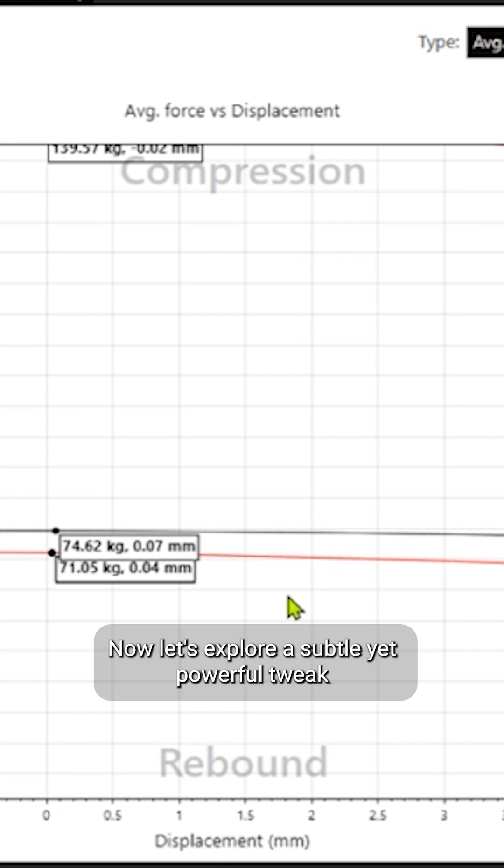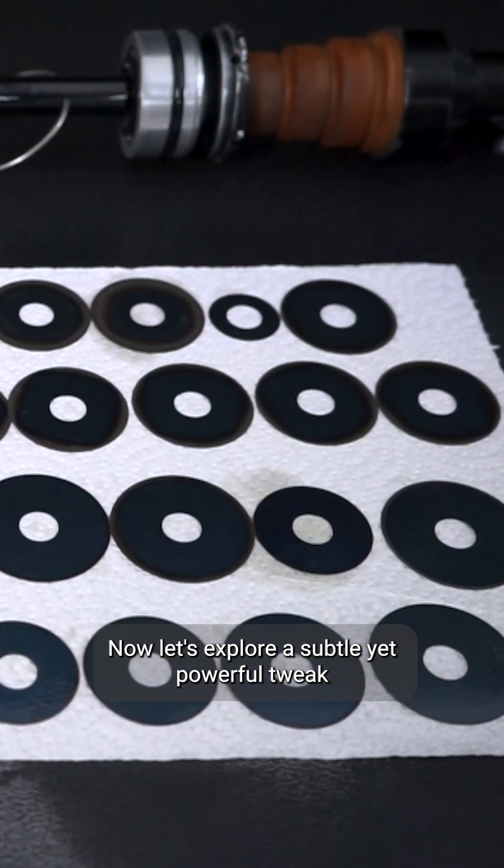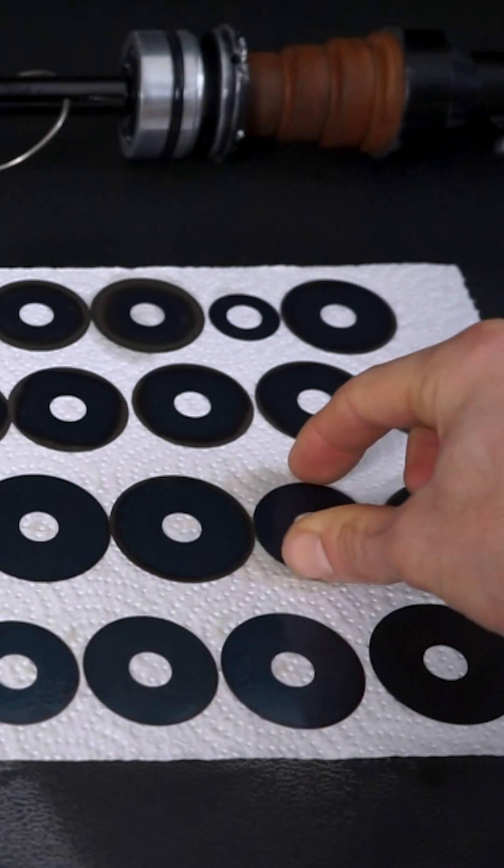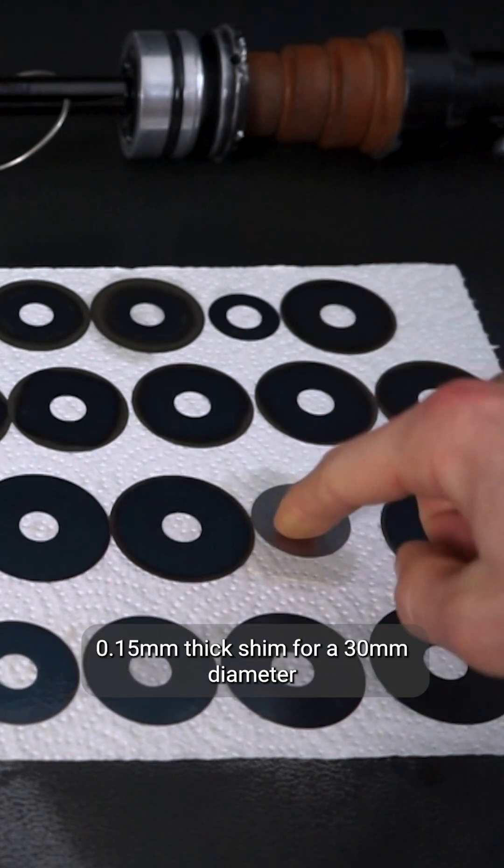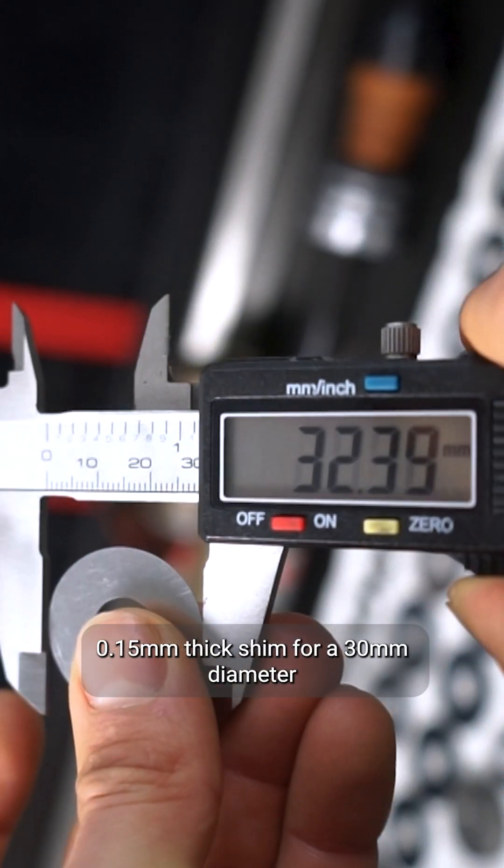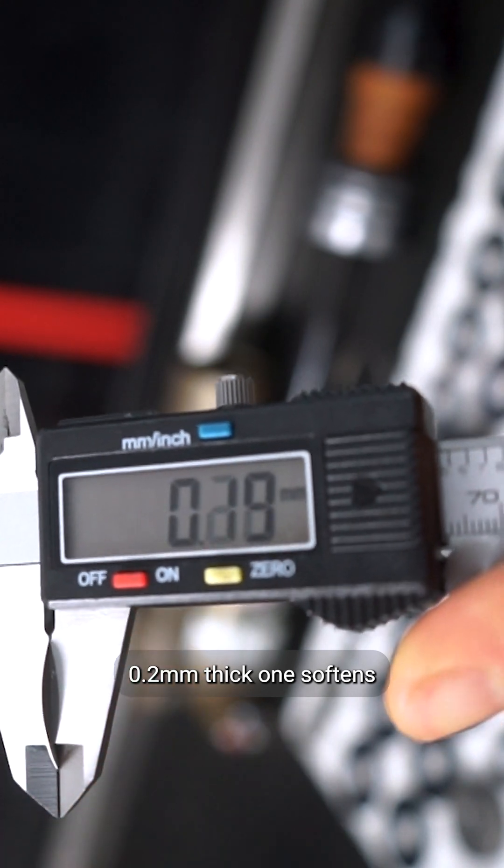Surprised by the results? Now let's explore a subtle yet powerful tweak: the crossover shim. Swapping a 36mm diameter, 0.15mm thick shim for a 30mm diameter, 0.2mm thick one